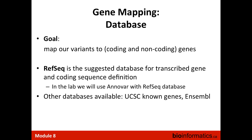ANOVAR uses the RefSeq database for all gene, transcript, and protein sequences. Other databases — UCSC Genome Browser and Ensembl — also provide their own gene and transcript collections. No single database is clearly better than another, but the key recommendation is: once you choose a database, use it throughout your entire pipeline, because converting between databases and their identifiers can get messy and cause information loss.